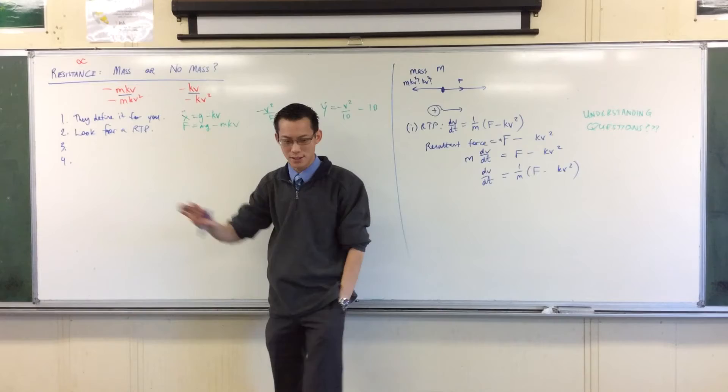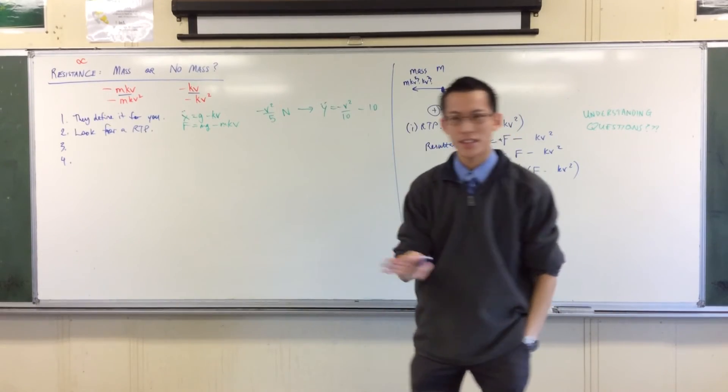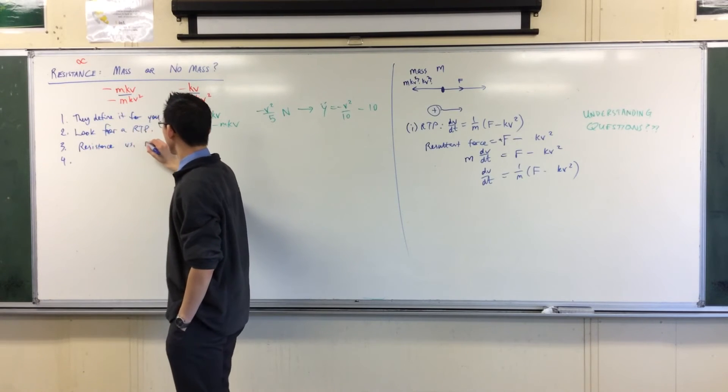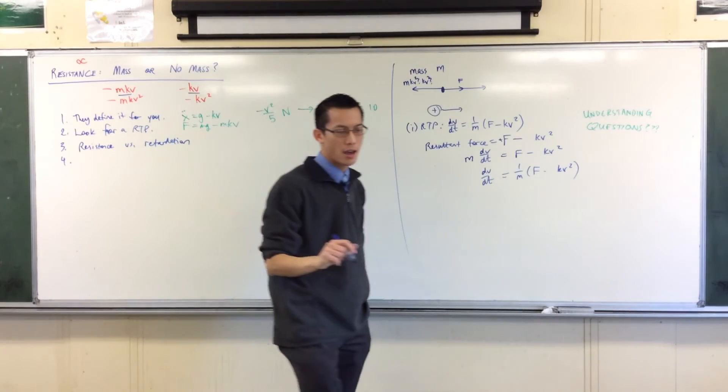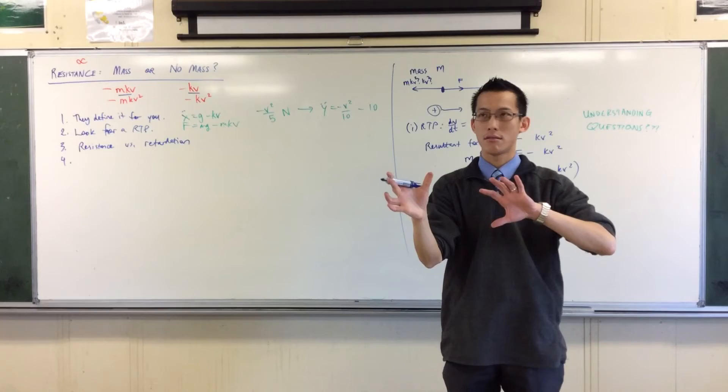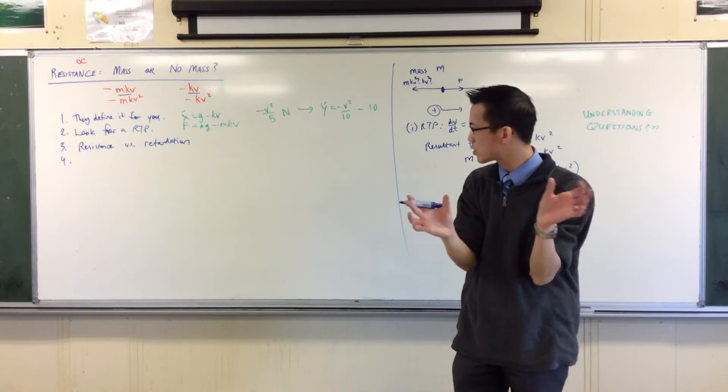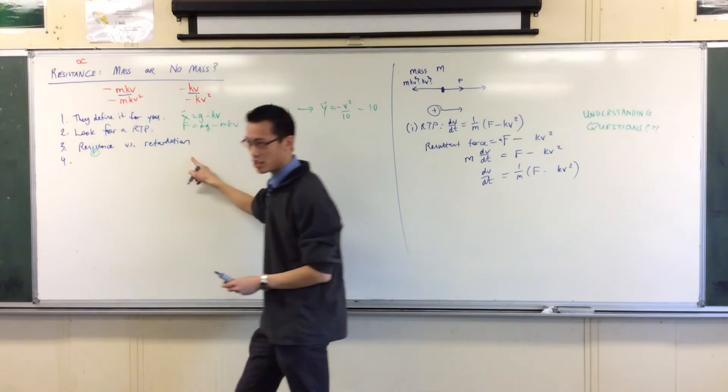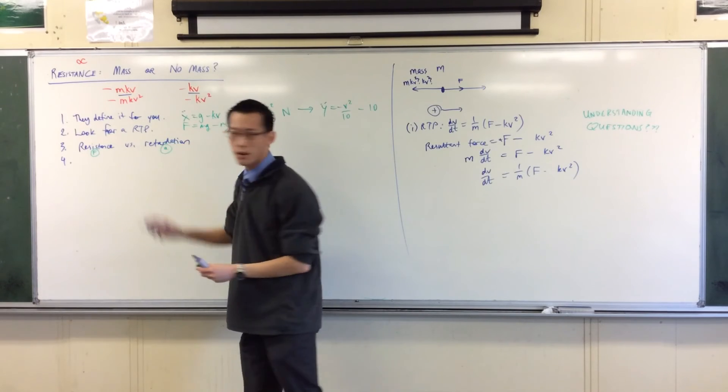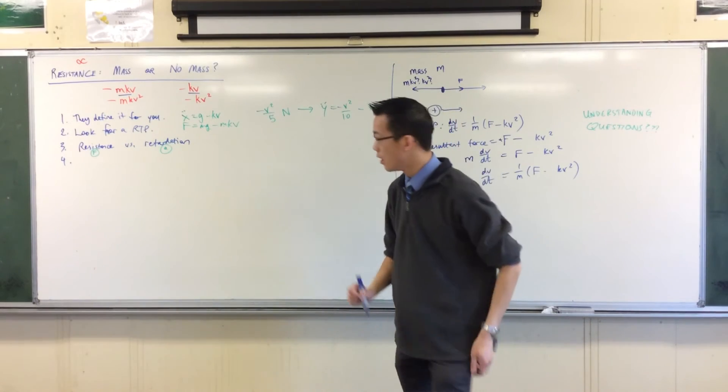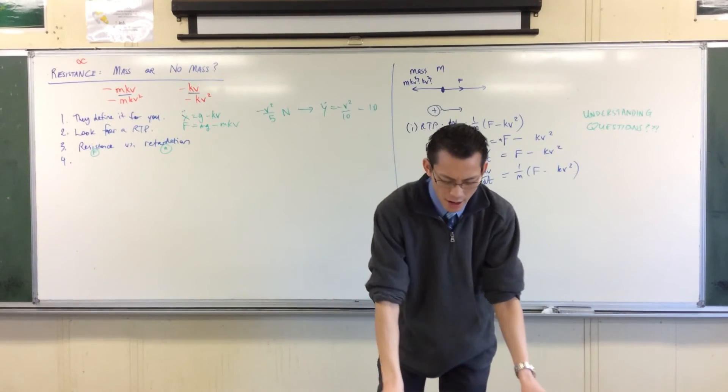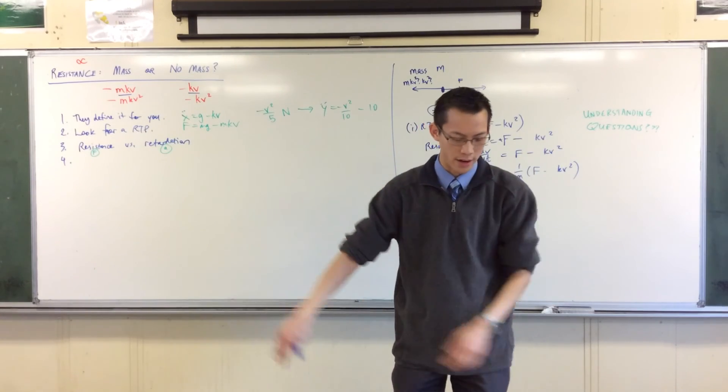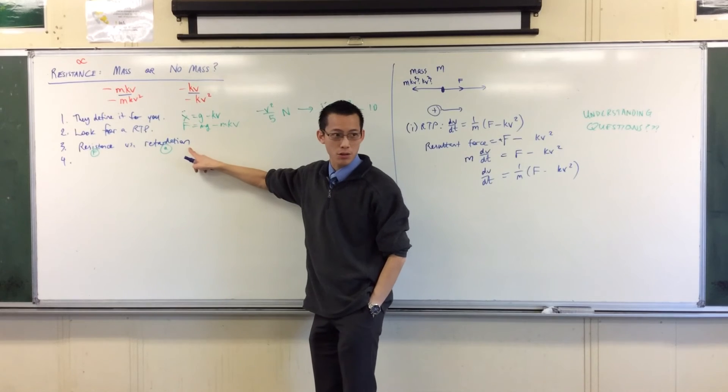All right, so it's a bit awkward. But finally, thirdly, you need to compare resistance versus retardation. Remember we introduced these terms before. They're about force or they're about acceleration. Which one's which? Resistance is about force whereas retardation is about acceleration. So suppose they tell you that retardation is proportional to velocity.